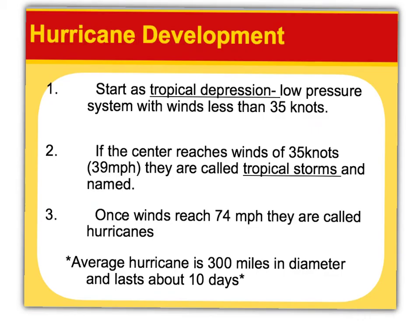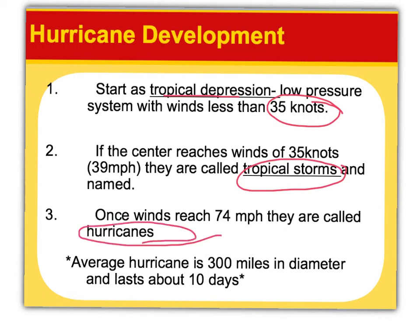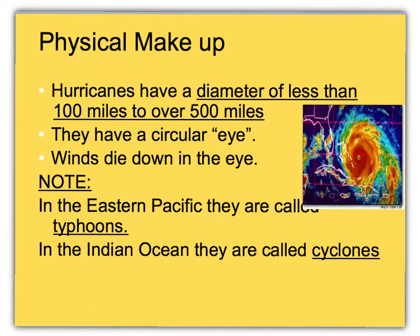Hurricanes start as tropical depressions based on their wind speed. If wind speed increases, they become tropical storms and are given names. Once they reach 74 miles per hour, they are called hurricanes. The average hurricane is about 300 miles in diameter and lasts about 10 days, though they can range from 100 to 500 miles in diameter. They all have a central eye. Hurricanes are also known as typhoons or cyclones, depending on where you live.